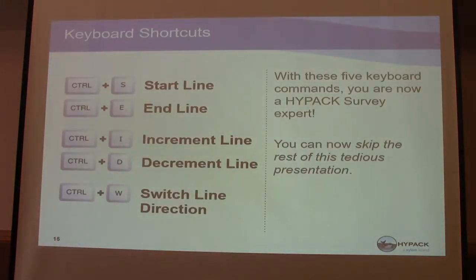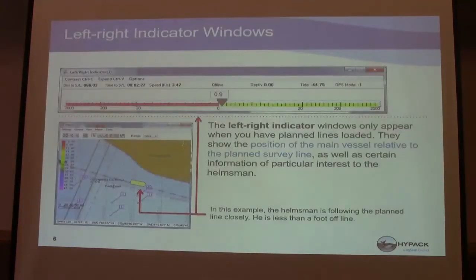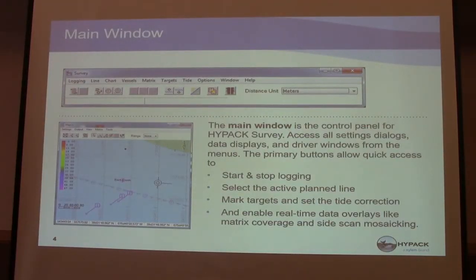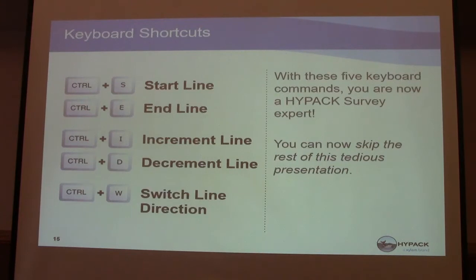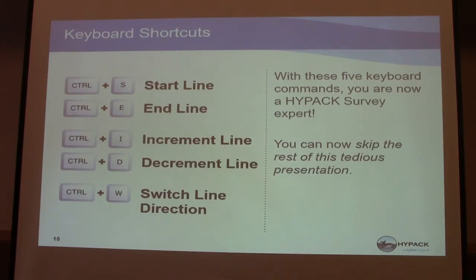For keyboard shortcuts, start and stop logging on the left can be done with shortcuts. Control-S and Control-E are for start line and end line. So if you have multiple lines you're running, you can start and stop a line of data — it saves that into a separate file and then starts a new one. You can start a new line and it'll end the current line, save it, and then start a new one.